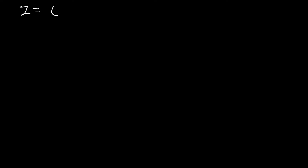Example 3: Let z = (1 + i)^6. When you have a question like this, it is not in polar form, so you must first convert what is in the brackets to polar form, then raise the polar form result to the 6th power.